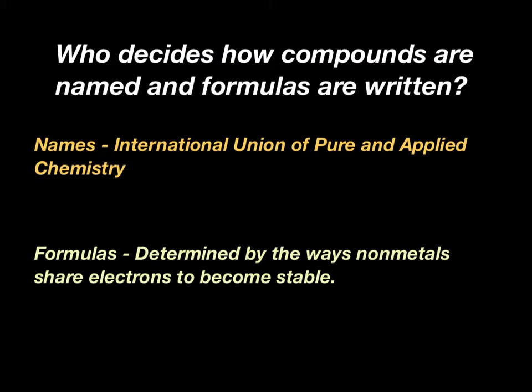Now, just like on binary ionic compounds, the binary molecular compound names are determined by the International Union of Pure and Applied Chemistry, or IUPAC, which is something that you need to know. But the formulas are determined by the way the nonmetals share the electrons to become stable.